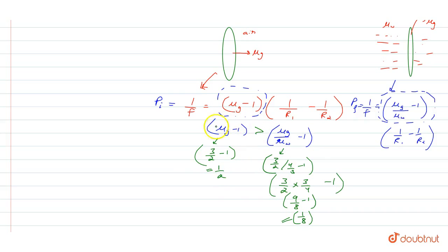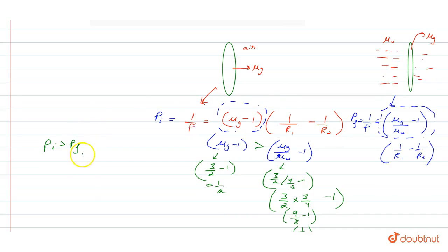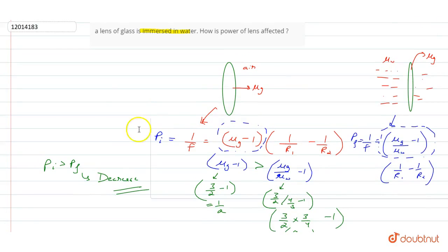That means the power initial is p i and the power final is p f. So p i is greater than p f. So power of lens will decrease. This will be our solution.